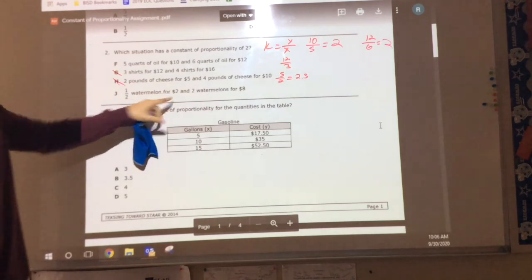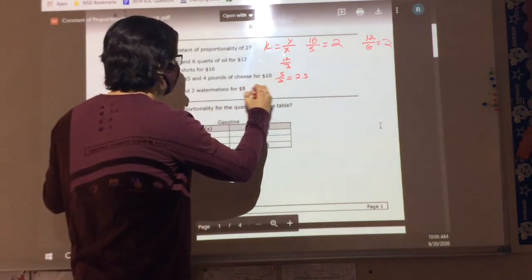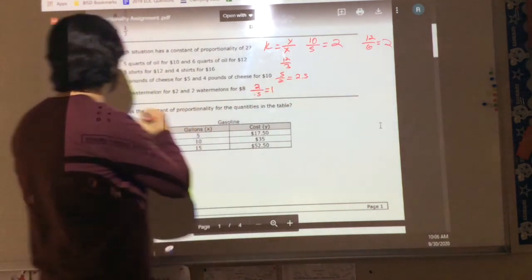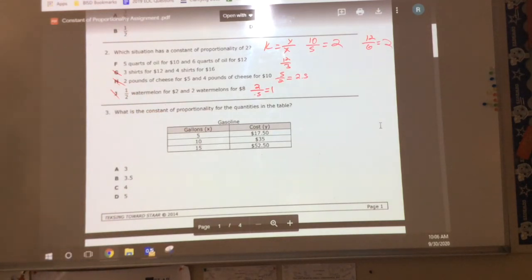And this has half a watermelon for $2. Well, if I do 2 divided by 0.5, that gives me 1, so it can't be that one either. So what does it have to be? Does that make sense to y'all? Yes.